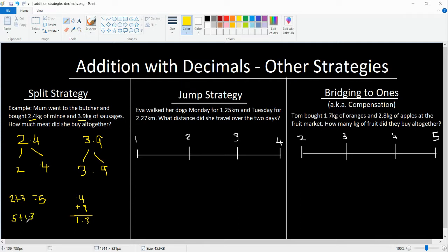Now we've got 5 plus 1.3, and that gives us our total answer of 6.3 kilos. That is the split strategy.